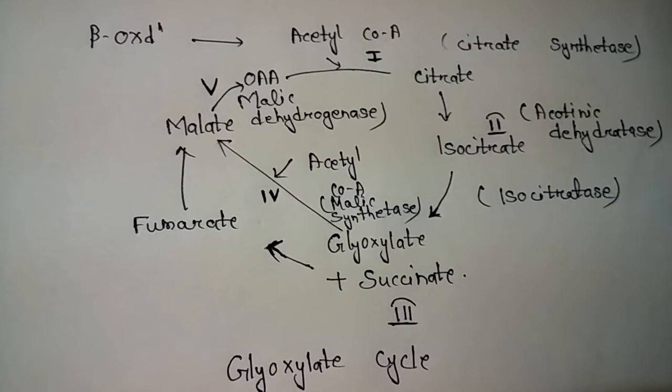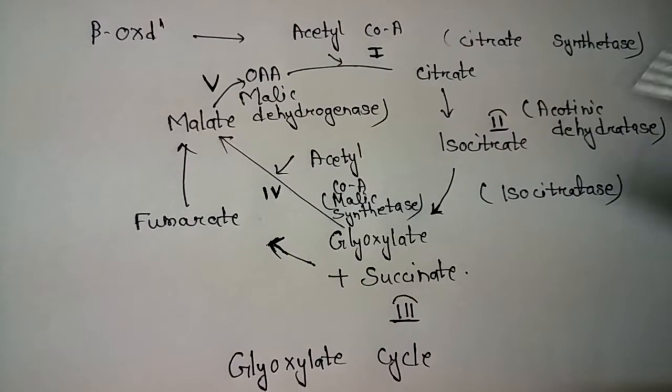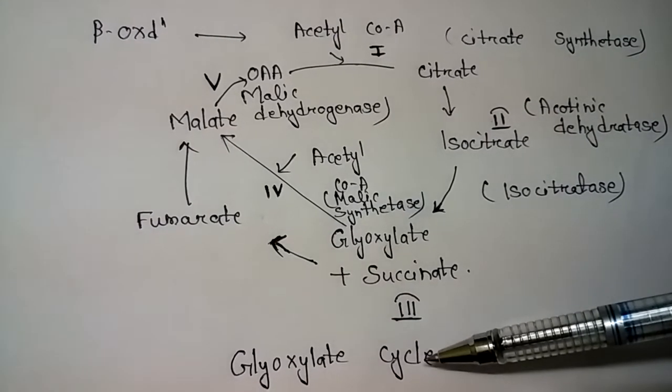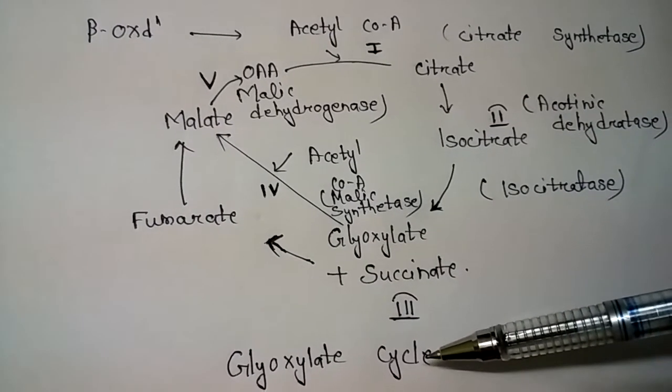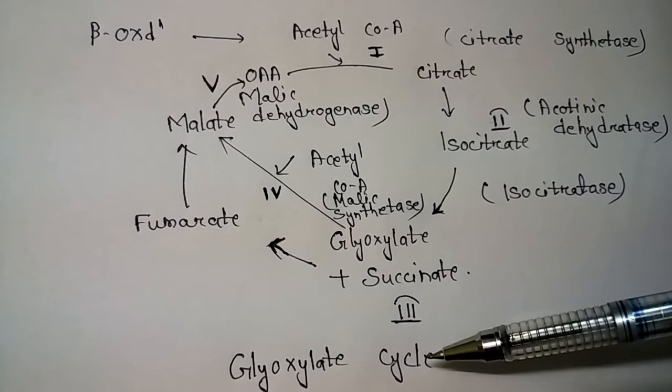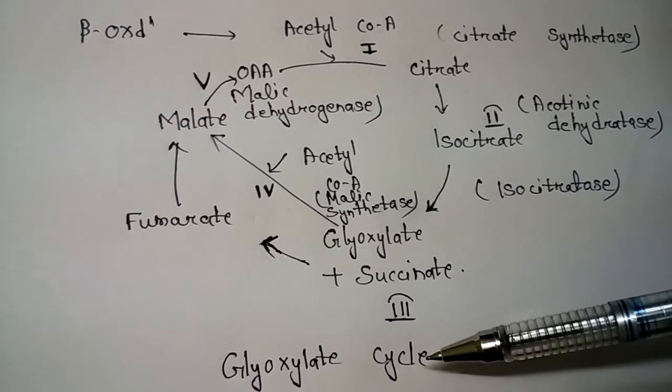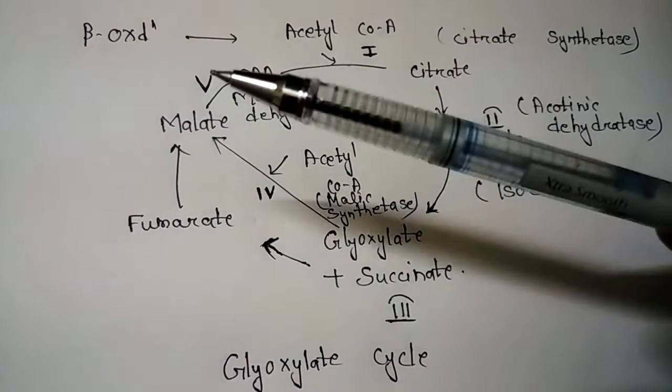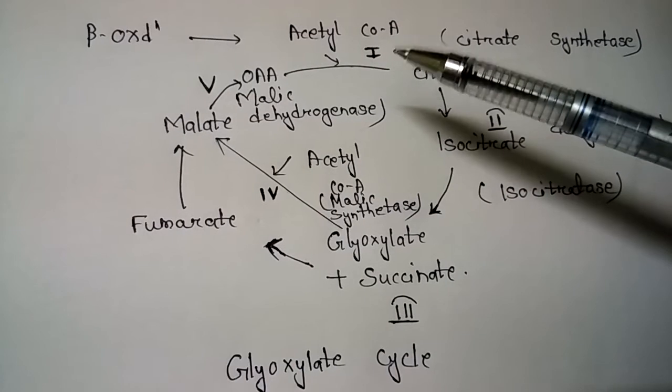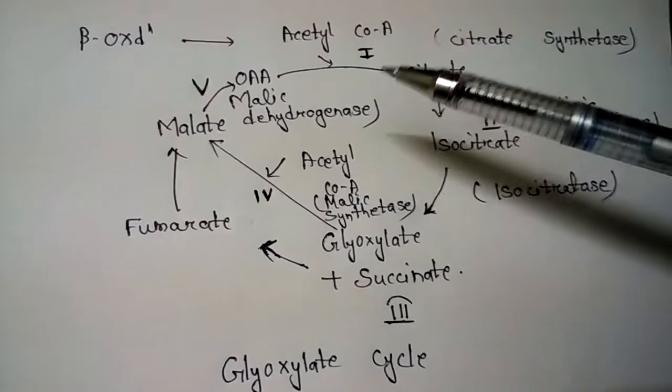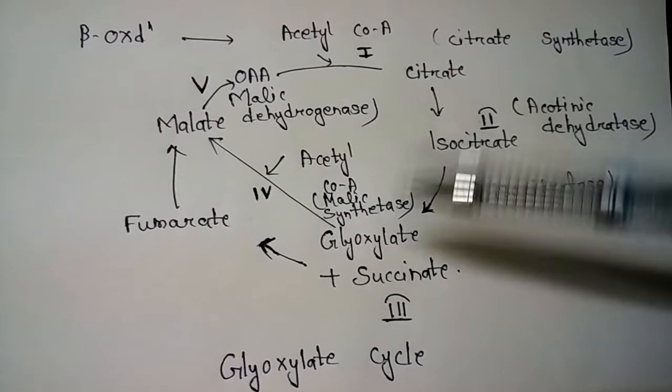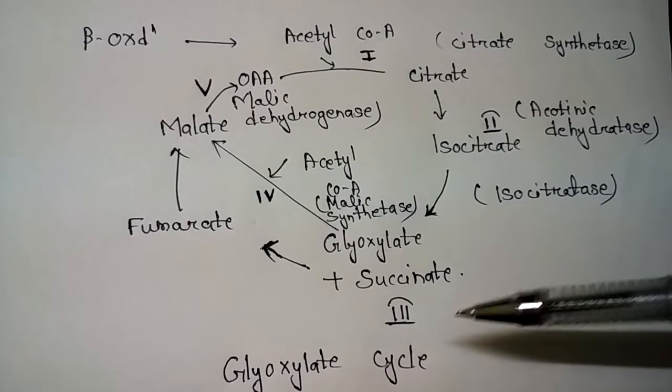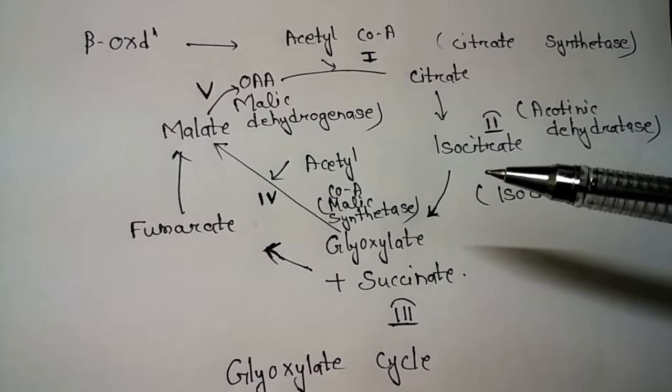Hello everyone, welcome back to DNA Patients. Today's topic is the glyoxylate cycle, which is the conversion of fats into carbohydrates. We know that in beta oxidation, fatty acids are broken down into acetyl coenzyme A. The glyoxylate cycle reactions are really similar to the Krebs cycle reactions.